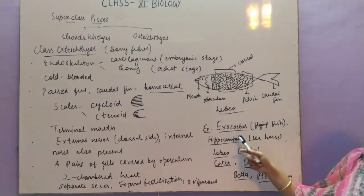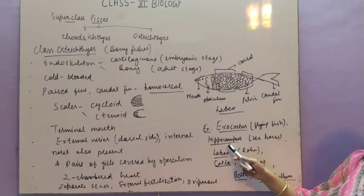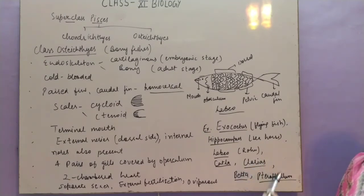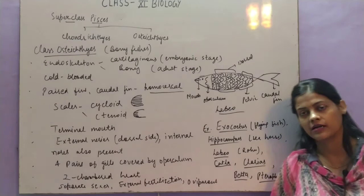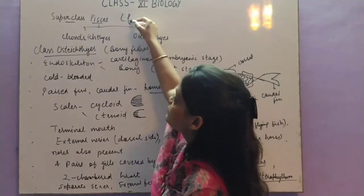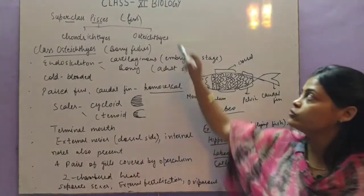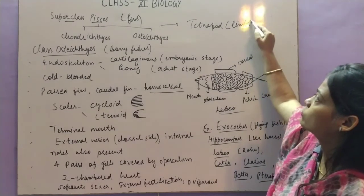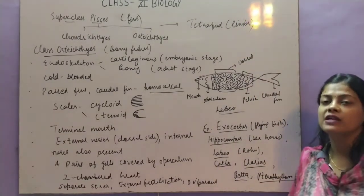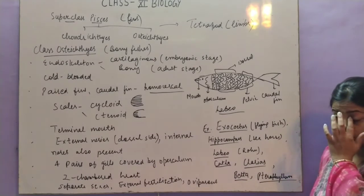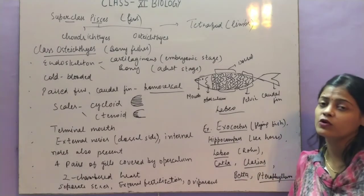Examples of Osteichthyes include Exocoetus, common name flying fish; Hippocampus, common name seahorse; Labeo, common name rohu; Katla; Clarius; Betta; and Pterophyllum. These are the examples given in the NCERT book. With this we are finished with super class Pisces, which includes those with fins for locomotion. The next super class is Tetrapoda, which have limbs for locomotion.